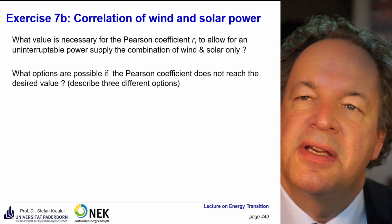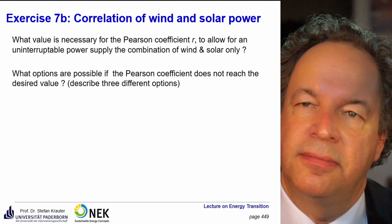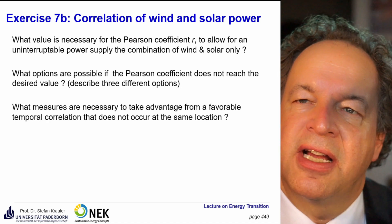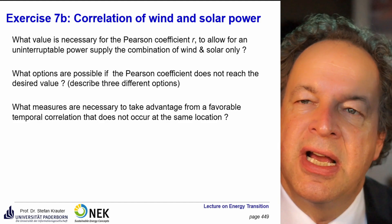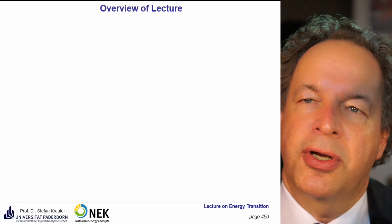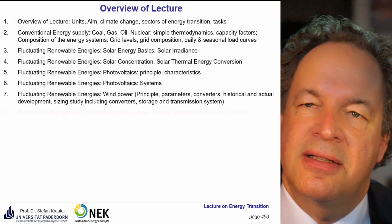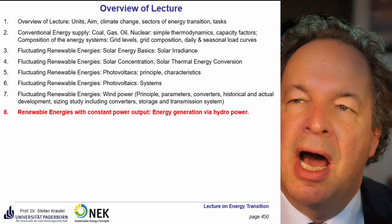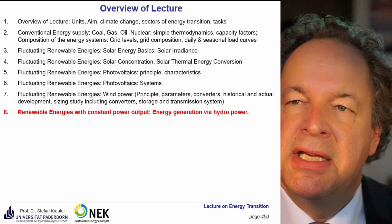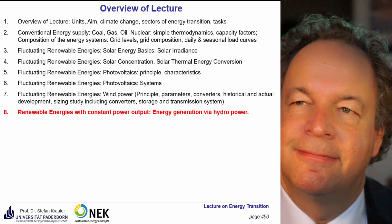What options are possible if the Pearson correlation coefficient does not reach the desired value? What measures are necessary to take advantage of a favorable temporal correlation that does not occur at the same location? That was the homework. The next lecture will be more extensive — it will be about hydropower, specifically the advantage of hydropower, which is its constant power output, at least for some types. We will discuss this next week. Thank you very much.